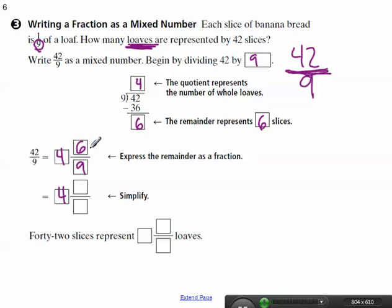And then 6 out of 9. So when I simplify, remember how we simplify fractions? Divided by the greatest common factor would be 3. So I'm going to have 2 thirds.